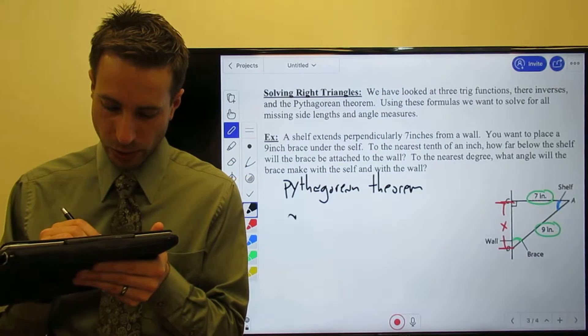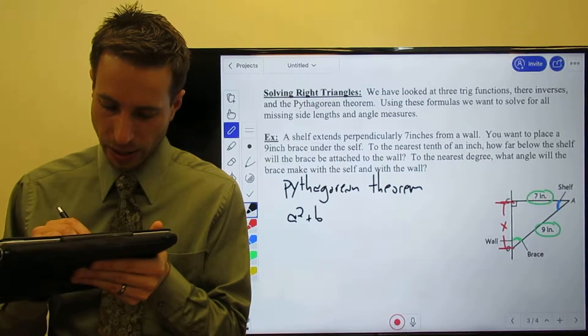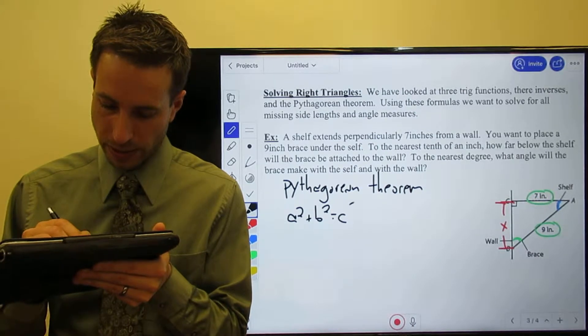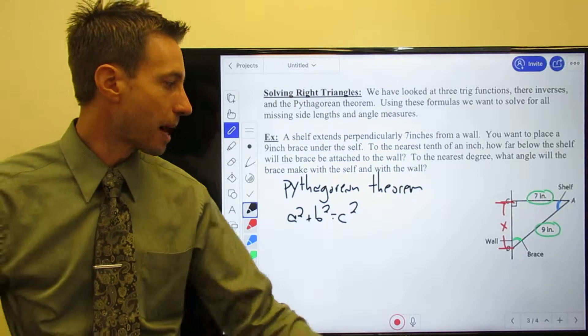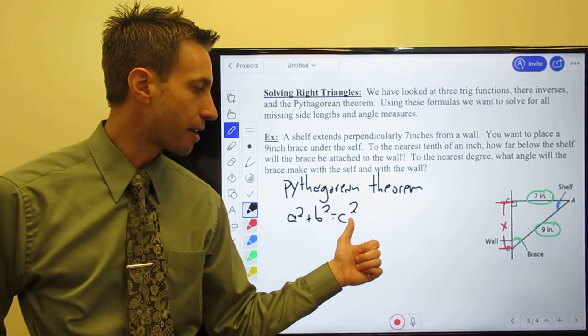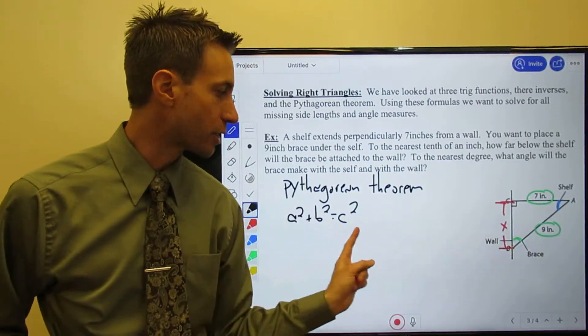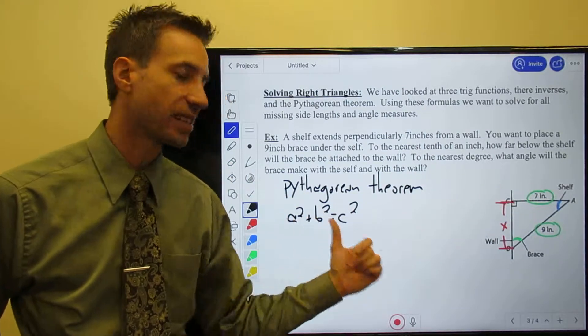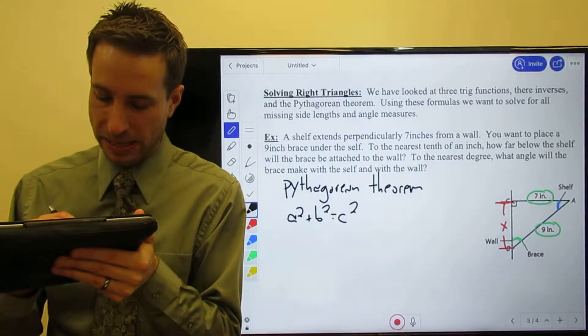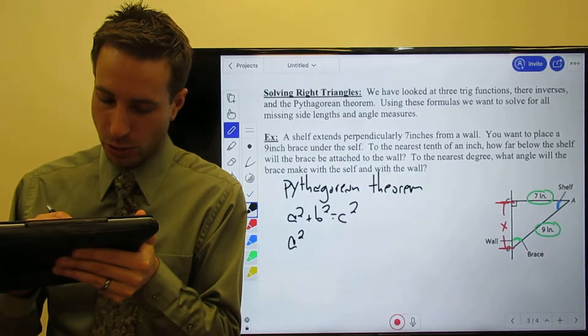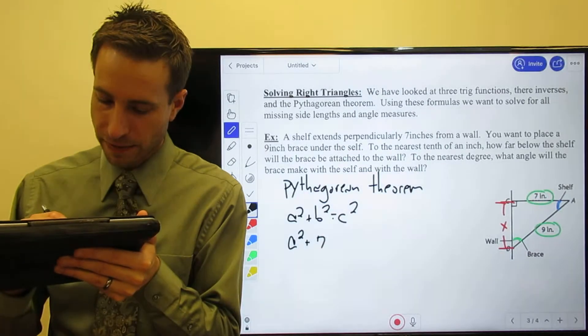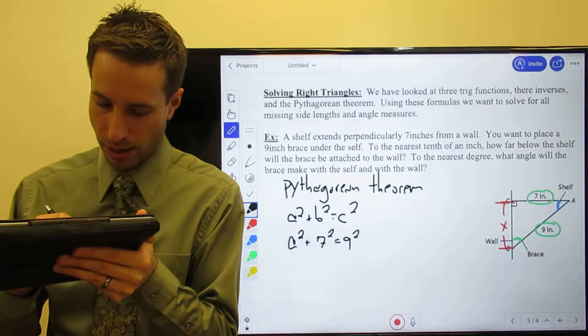Pythagorean theorem: A² + B² = C². Please keep in mind nine is the hypotenuse - it's the longest side. So make sure that nine goes in for C. The seven doesn't matter; it could be A or B. So A² + 7² = 9².